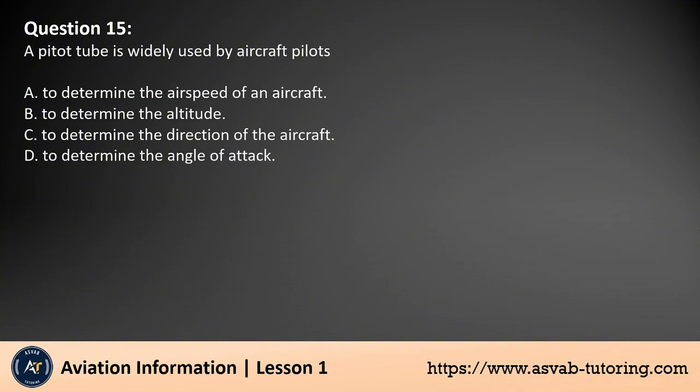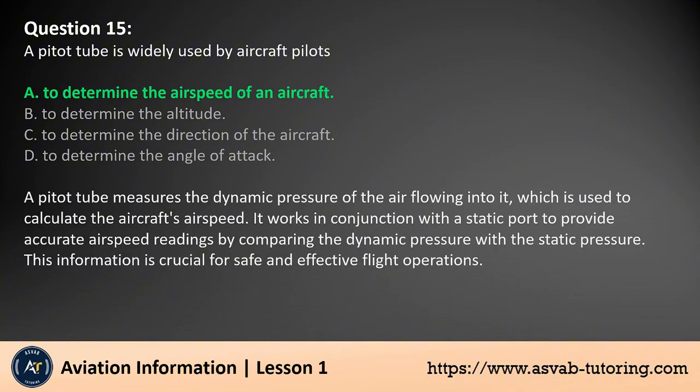Question 15. A pitot tube is widely used by aircraft pilots. A. To determine the air speed of an aircraft. B. To determine the altitude. C. To determine the direction of the aircraft. D. To determine the angle of attack. The answer is A. A pitot tube measures the dynamic pressure of the air flowing into it, which is used to calculate the aircraft's airspeed. It works in conjunction with a static port to provide accurate airspeed readings by comparing the dynamic pressure with the static pressure. This information is crucial for safe and effective flight operations.